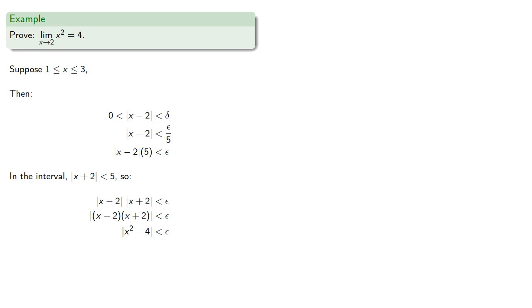Again, if we want to replace delta with epsilon fifths, because this is on the greater than side, we need to make sure that delta is less than epsilon fifths.